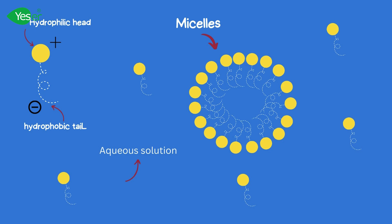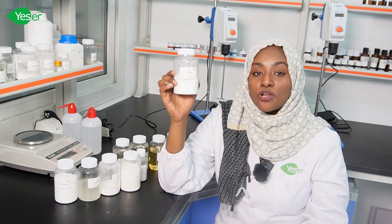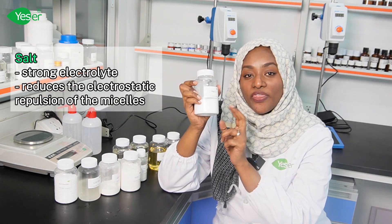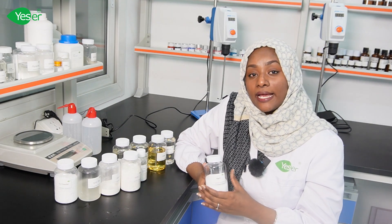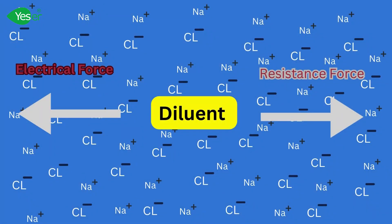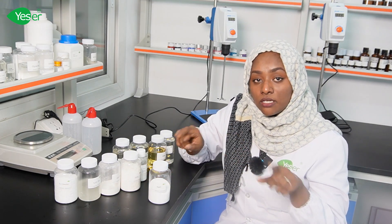Micelles form with a positive charge on the outside and negative charge on the inside. At that point, the role of salt appears. What does salt do? Salt is a strong electrolyte. Adding salt reduces the electrostatic repulsion between the micelles. We add salt because it's an electrolyte, producing negative and positive ions. This behavior can be summarized by the Debye-Hückel theory, a mathematical model used to describe the behavior of electrolytes such as salt in solution, explaining how ions interact with others in solution.